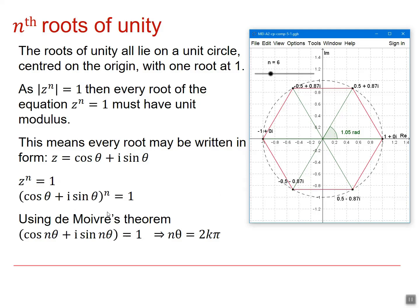So if z to the n equals 1, that means that cos theta plus i sine theta to the n equals 1. And using De Moivre's theorem, that gives us that cos n theta plus i sine n theta is equal to 1. And that tells us that n theta must be 2k pi.